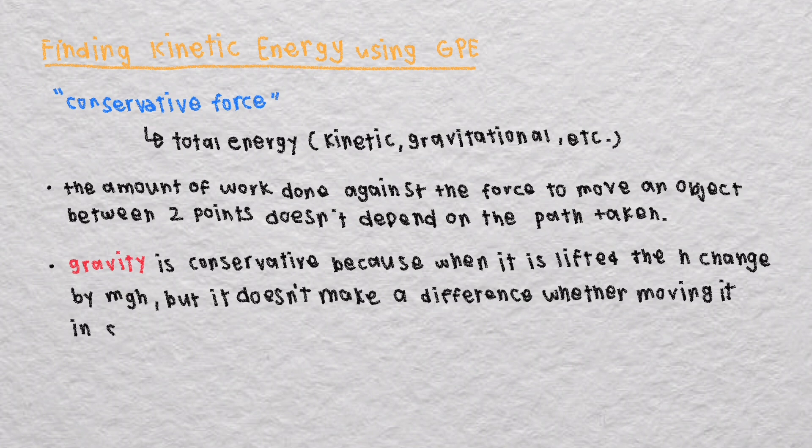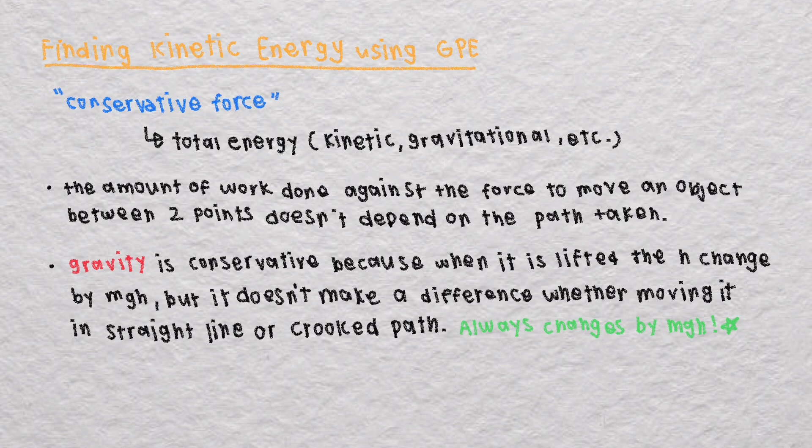So gravity is a conservative force because lifting an object from a reference point to a height H changes the gravitational potential energy by MGH. But it doesn't make a difference whether you move it in a zigzag path or a straight line. It always just changes by MGH. So let's try an example.